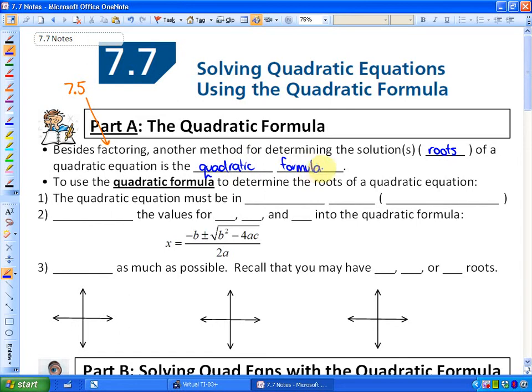To use the quadratic formula to determine the roots of a quadratic equation, first the equation must be in standard form. Standard form would be ax squared plus bx plus c equals zero, so you must have the squared term first, the x term second, the constant term third, and it must equal zero.